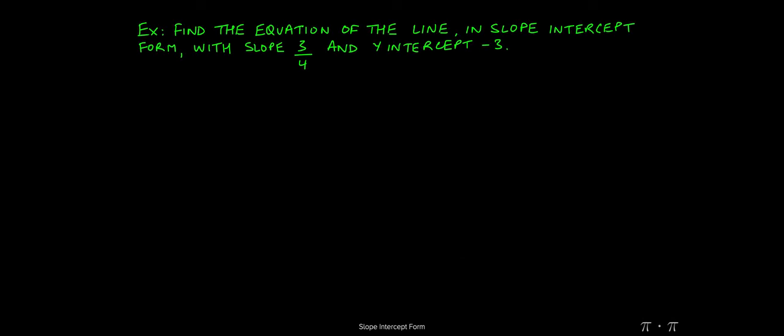Let's say we're asked to find the equation of the line in slope-intercept form. We're given a slope of 3 over 4, and we're given a y-intercept, or b, of negative 3.